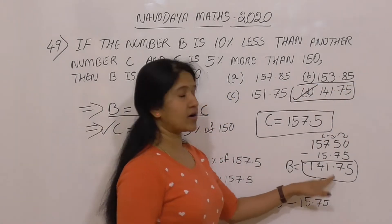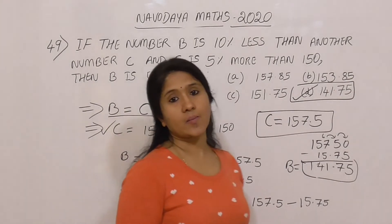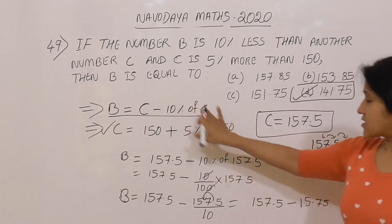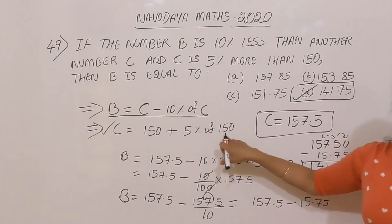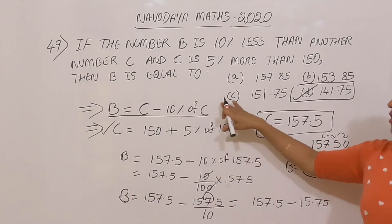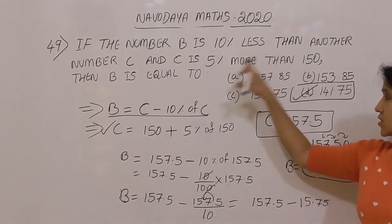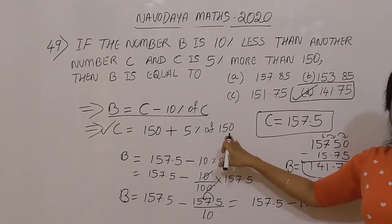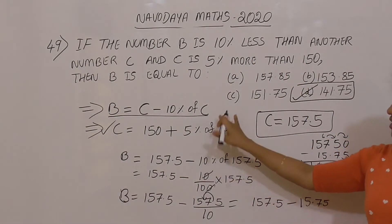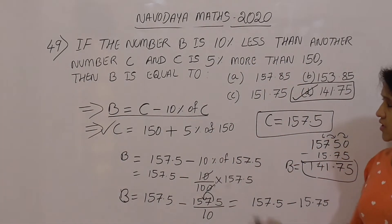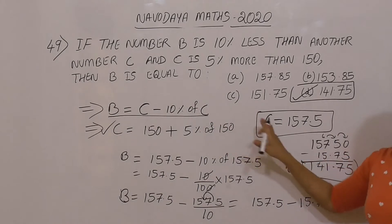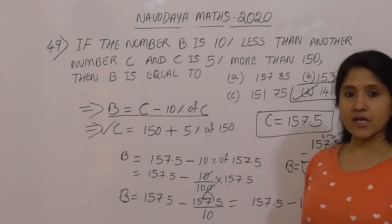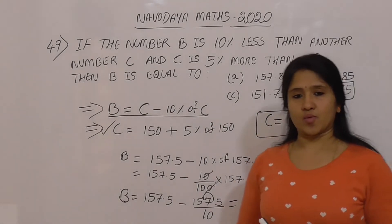The answer is 141.75. Check the options — option D is the right answer. This was a straightforward percentage concept. Easy to solve once you set up the equations correctly.